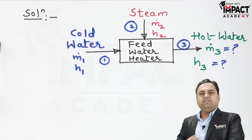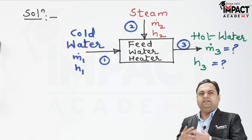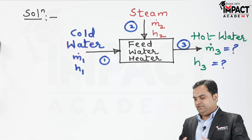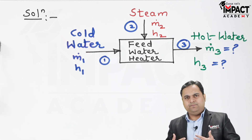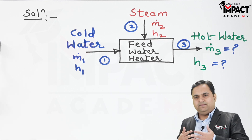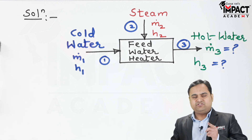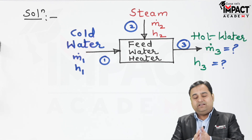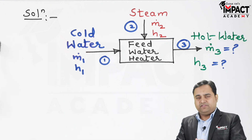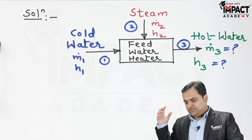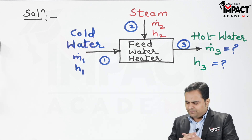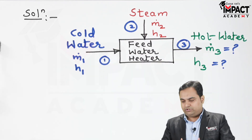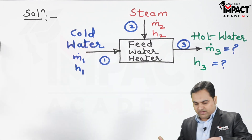A feed water heater is essentially a type of heat exchanger of direct mixing type. If it were of indirect mixing type, water and steam would not mix directly — water would pass through a different pipeline and steam through a different pipeline, with heat transfer occurring between them. Since they have mentioned it is of direct mixing type, there is direct mixing between water and steam.